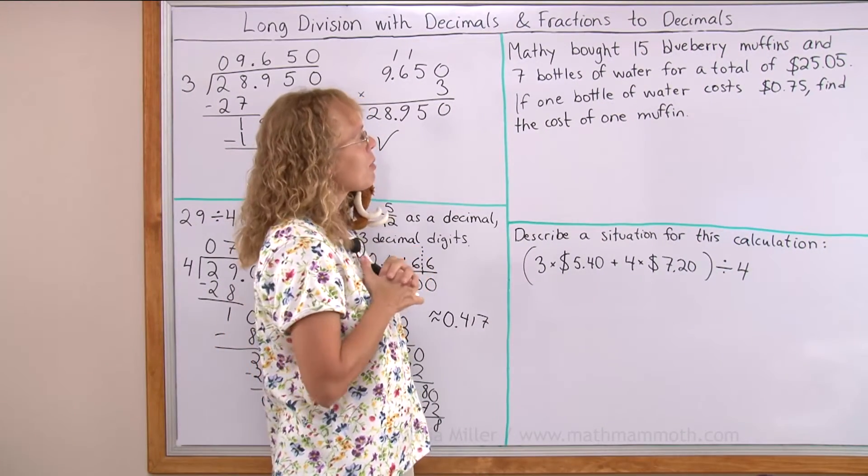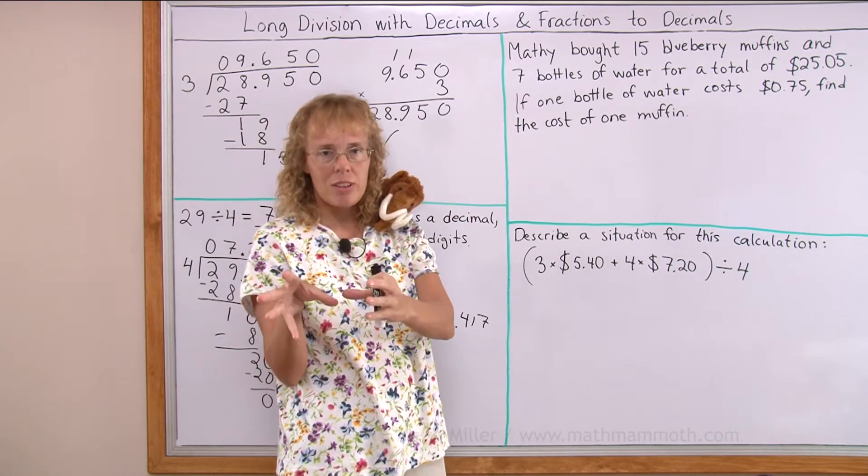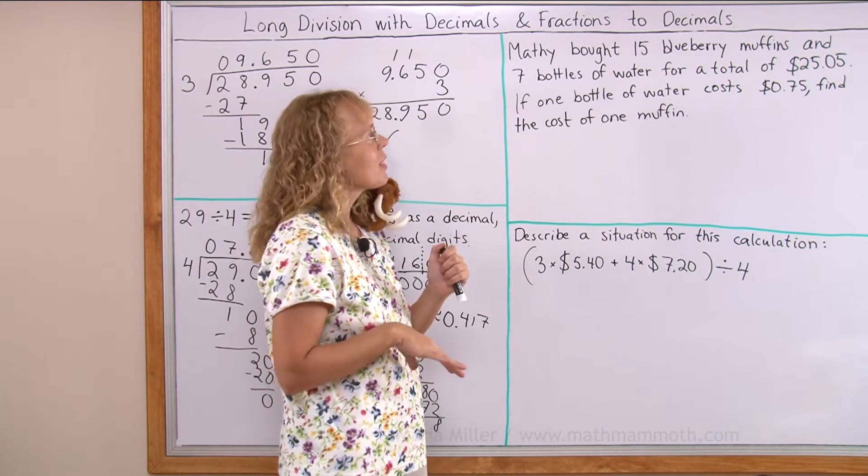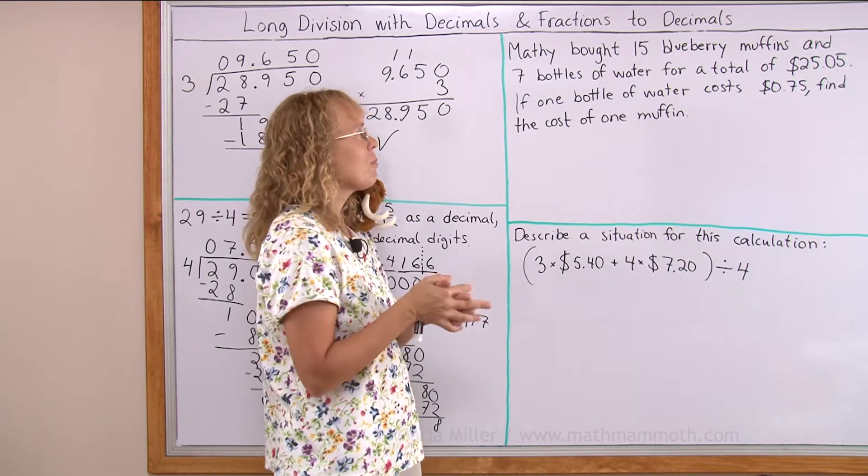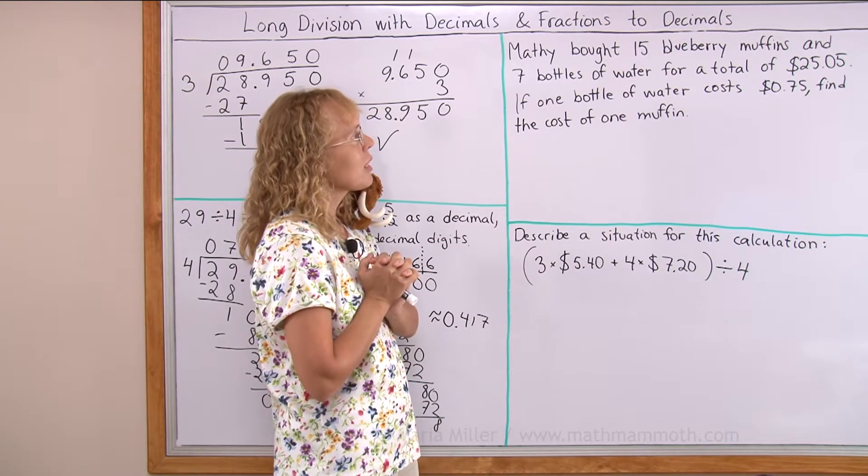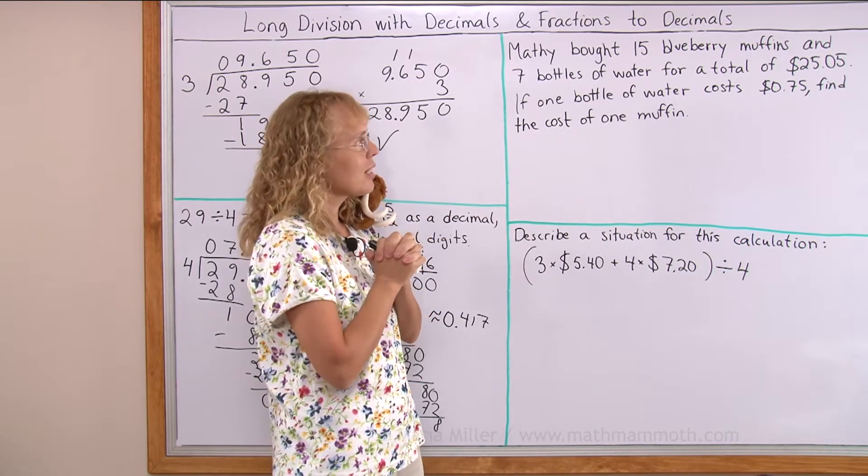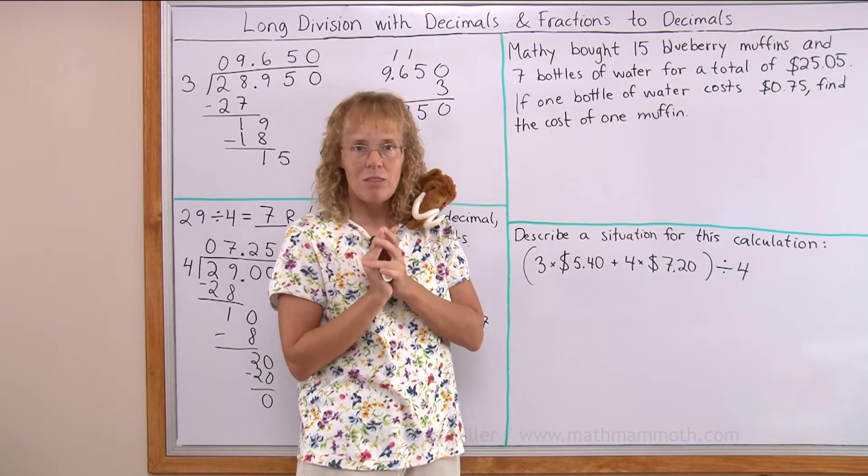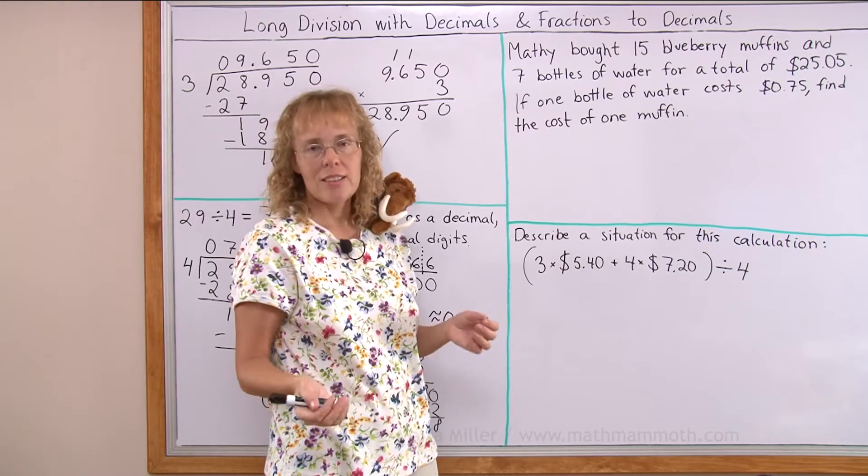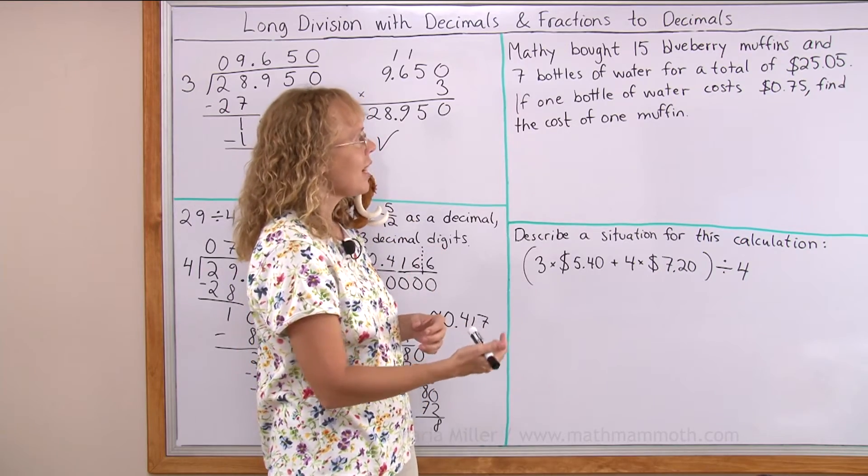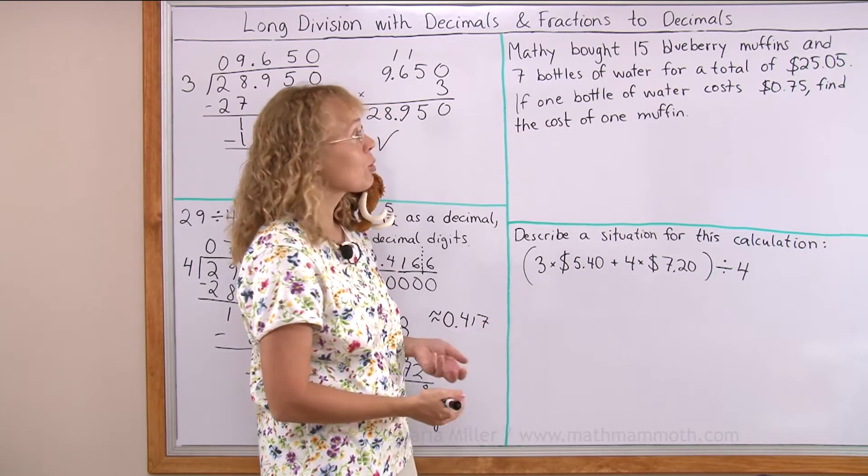This is a typical word problem. We have a bunch of muffins, a bunch of waters. We know the total, we know the price of one bottle of water, we don't know the price of one muffin. And if this seems complicated to you, you can get started by solving what you can solve. What can you solve using all this information? Something you can solve, right? Even if it isn't what it is asking, it might lead you to the final answer, and we can solve how much those waters cost.